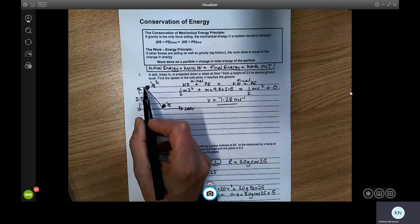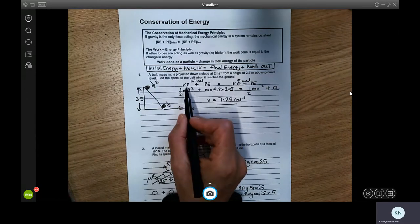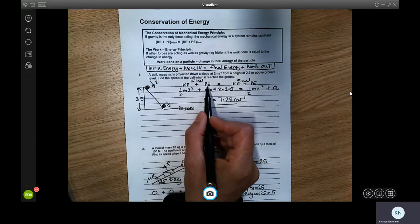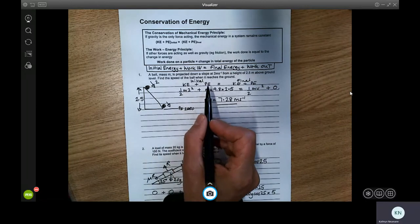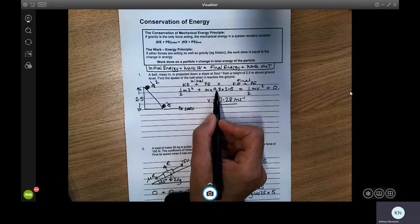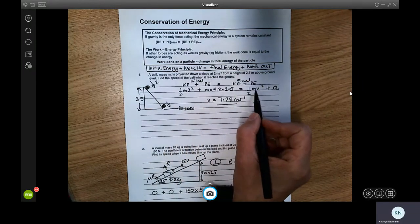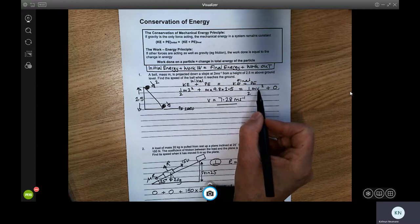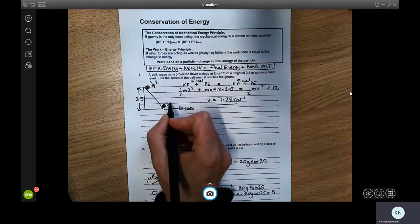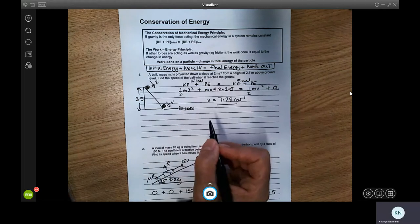So the only outside force that's acting here is gravity. We're going to look at initial kinetic energy plus initial potential energy. So that's a half mv squared plus mgh, and that's going to be equal to a half mv squared here.